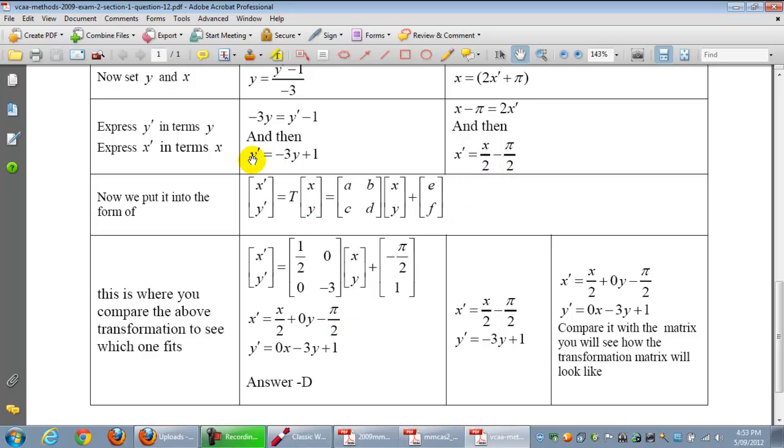Remember, this was y' = -3y + 1. That plus 1 will be there. So we need to know how we're going to get a -3. So 0, -3. And if you multiply this out, you've got 0 times x, then -3 times y, plus 1, which will give you that equation.